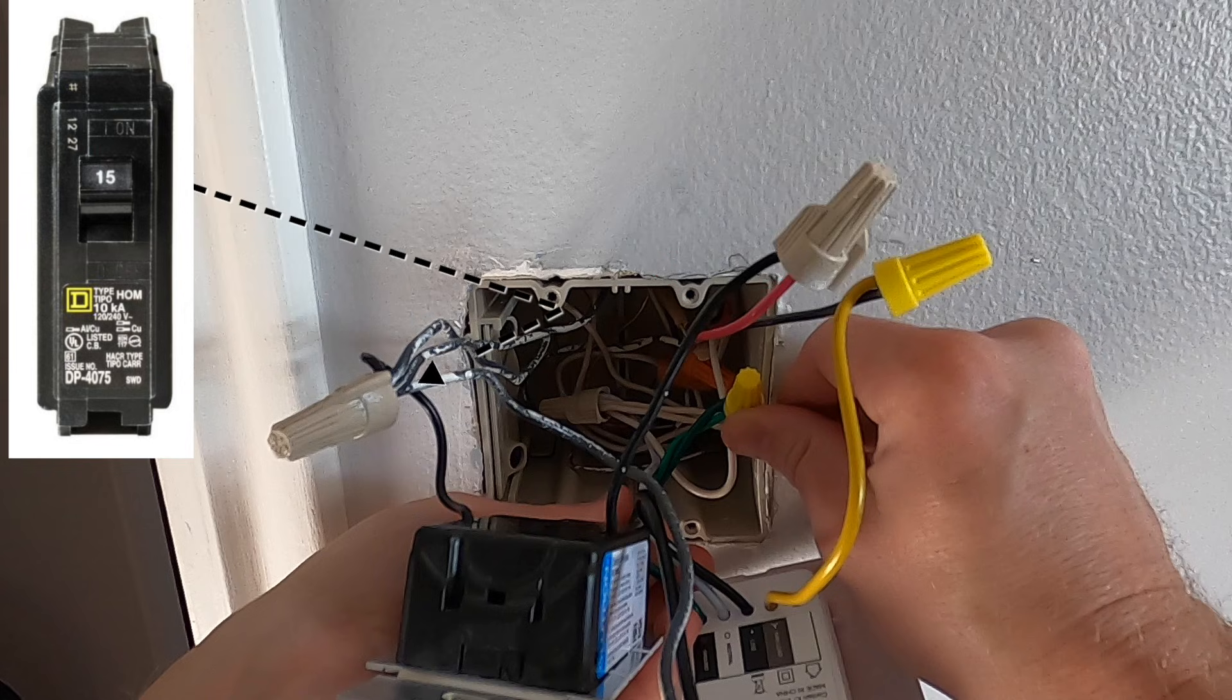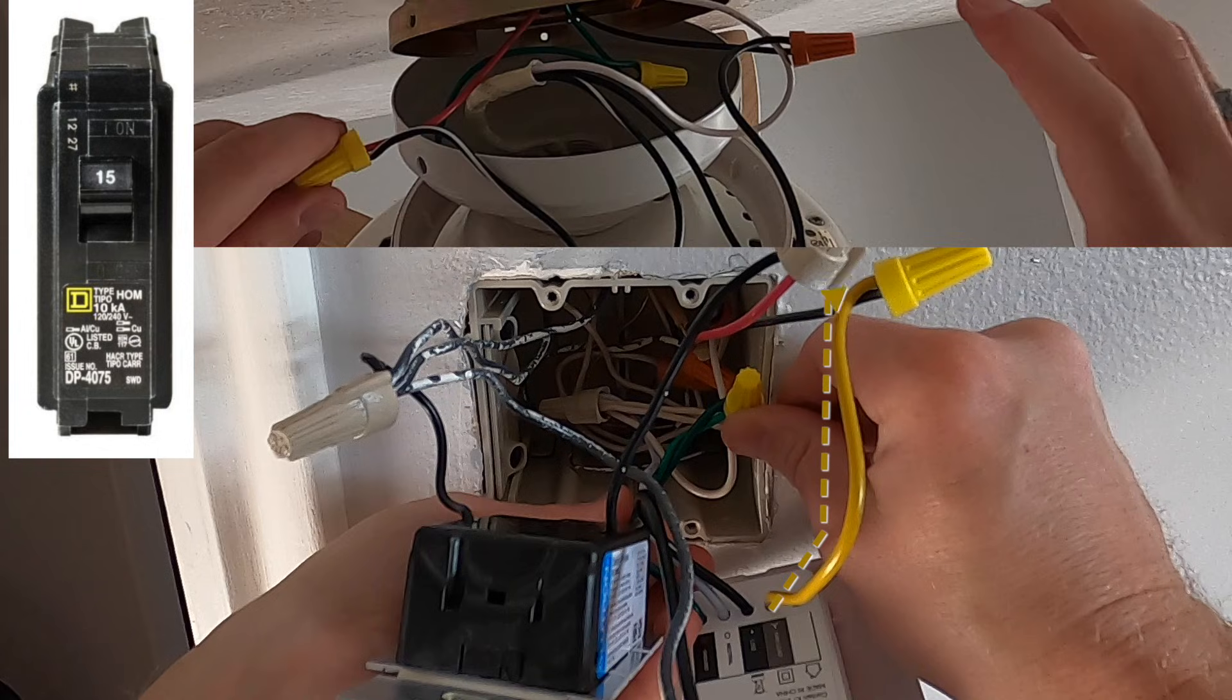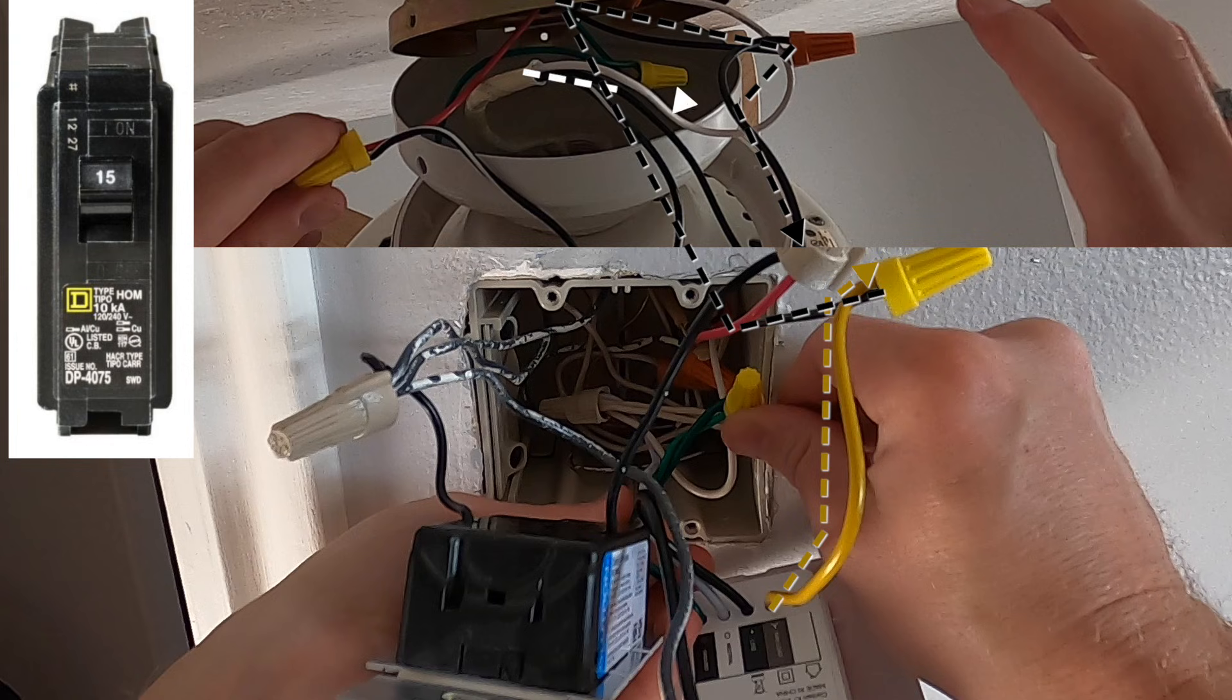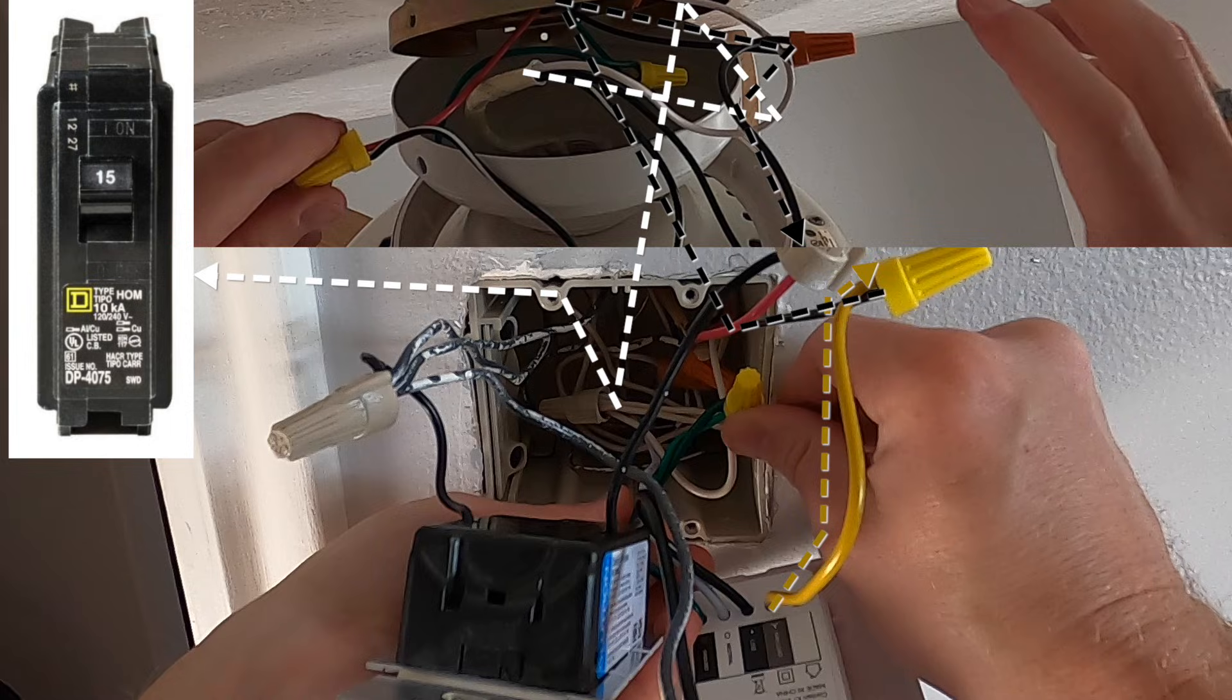For the fan switch, it gets power from the circuit breaker. When the switch is turned on, it sends power through the yellow wire into the black wire to control only the fan. Then the white neutral wire comes back from your fan back into the switch box and back to the circuit breaker panel to complete the circuit.